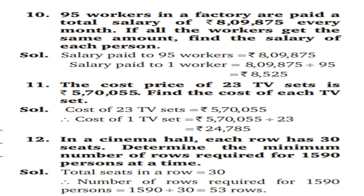Question 10: 95 workers in a factory are paid a total salary of Rs. 8,09,875 every month. If all workers get the same amount, find the salary of each person. Salary paid to 1 worker = 8,09,875 ÷ 95 = Rs. 8,525.